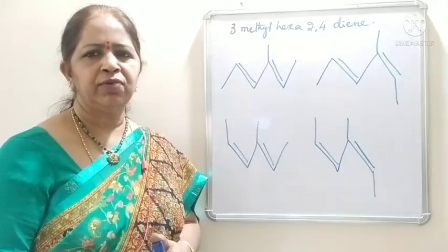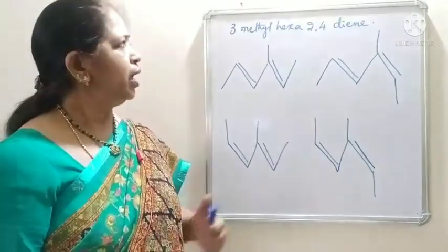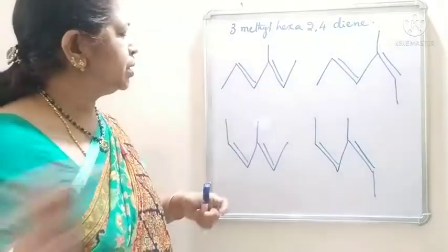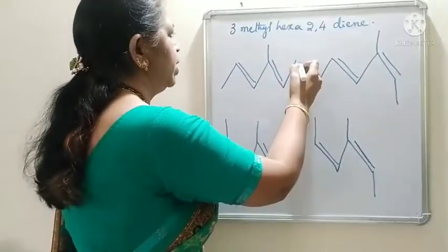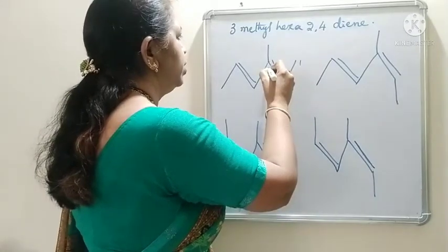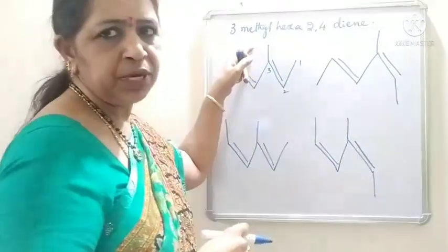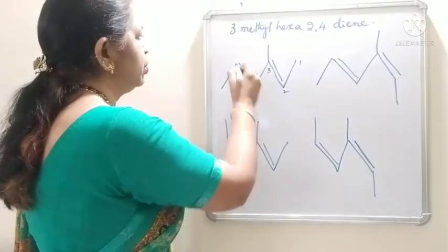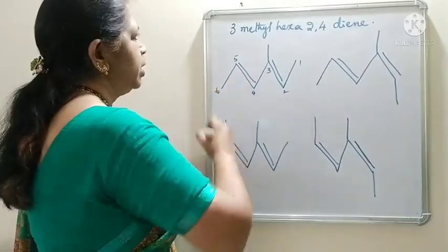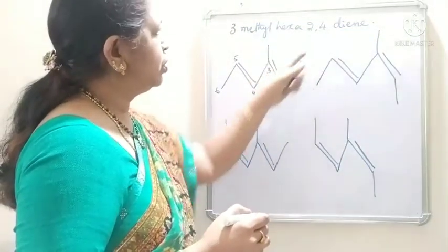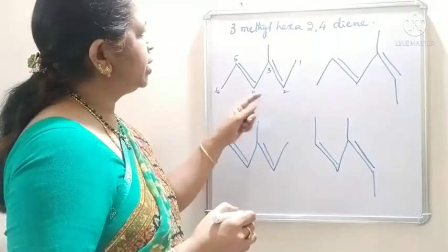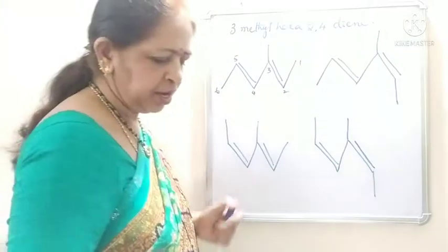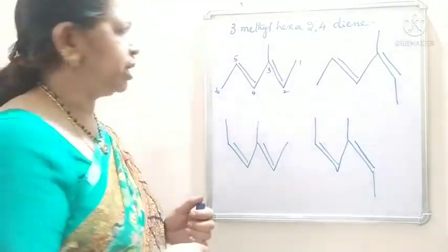Polyenes will have more than one double bond. I have taken here 3-methylhexa-2,4-diene. You have to number from this carbon 1, 2, 3 because this is the substituent. So, least number to the substituted carbon. You number from this side: 1, 2, 3, 4, 5, 6. It is hexa-2,4-diene and 3-methyl. Now, what is the EZ configuration around these double bonded carbon atoms?